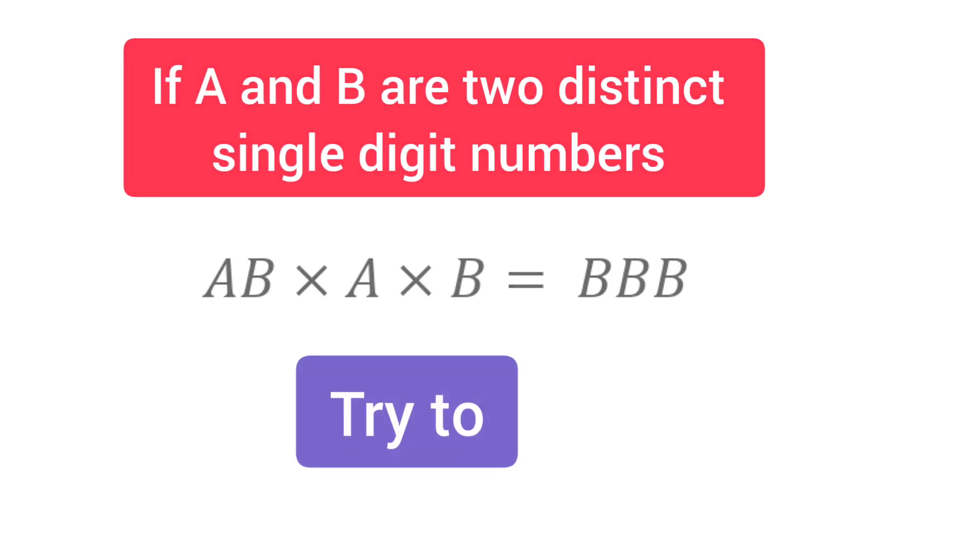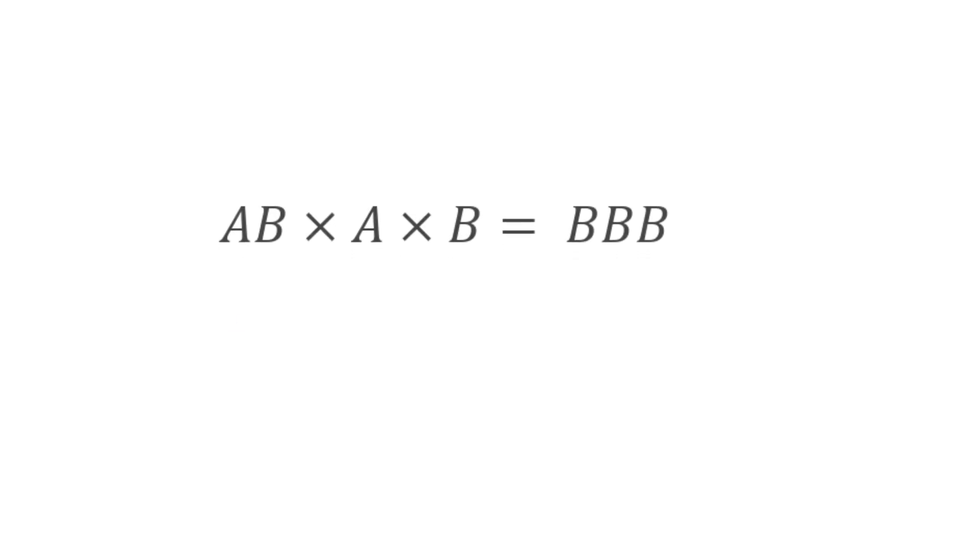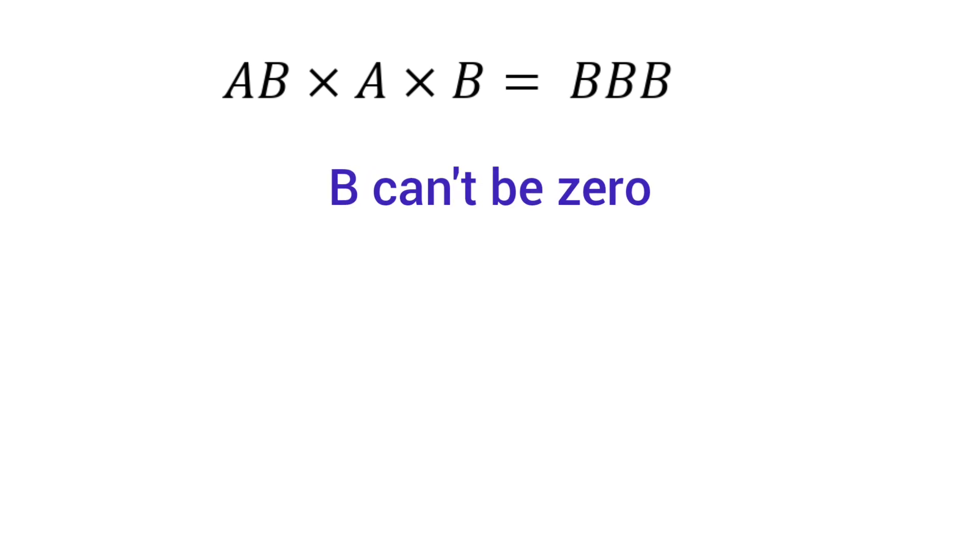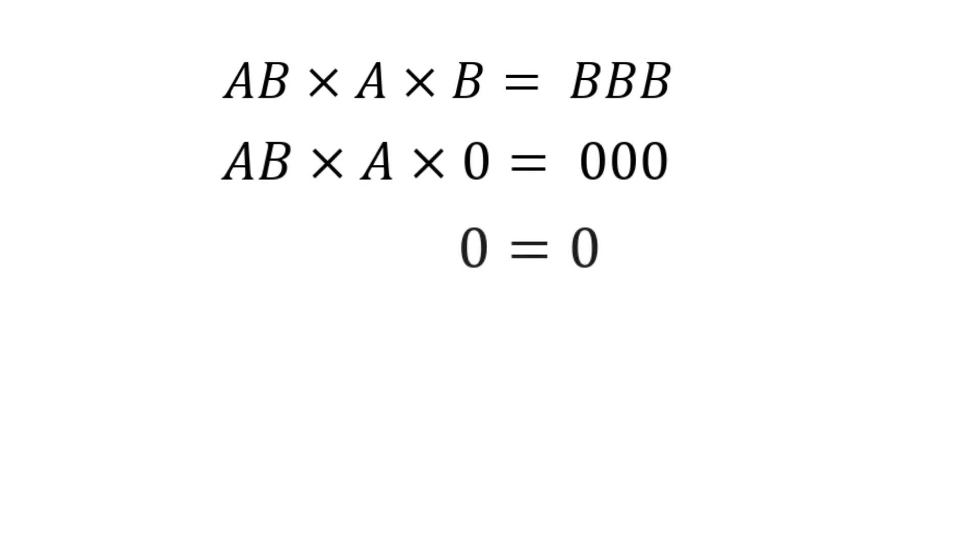Let's try to solve this question. Let's first write AB times A times B equals BBB. We know that BBB is a three-digit number and B can't be 0. If we put B equals 0, the entire expression results to 0, and it is given that A and B are two different numbers. So B can't be 0.